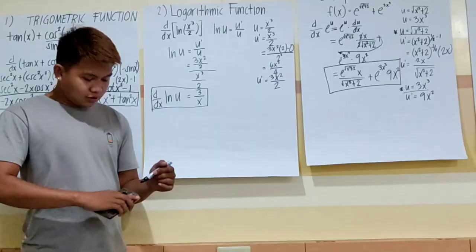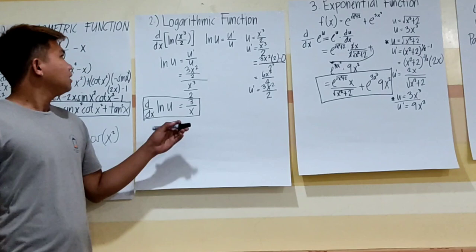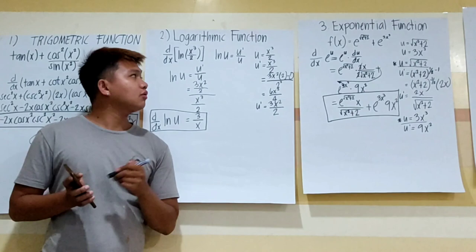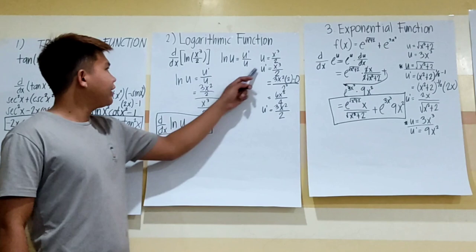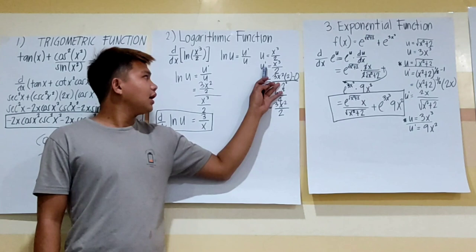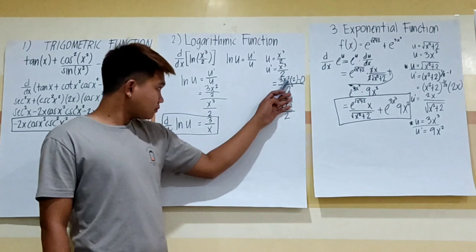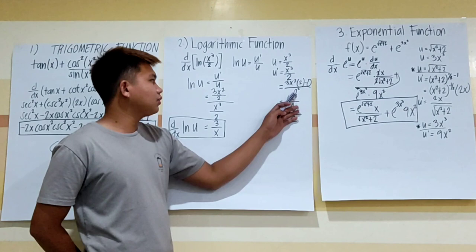The second one is the logarithmic function. The example is: find the derivative of ln(x³ / 2). The formula for the logarithmic function is: the derivative of ln(u) is equal to u prime over u. In this problem, u is x³ over 2. Then we derive u prime, which is the derivative of x³ over 2. The derivative of x³ is 3x², times 2 minus 0, all over the square of the denominator, which is 2 squared.